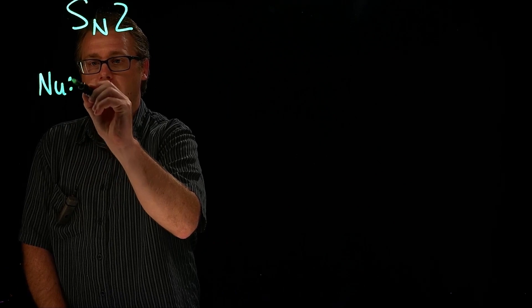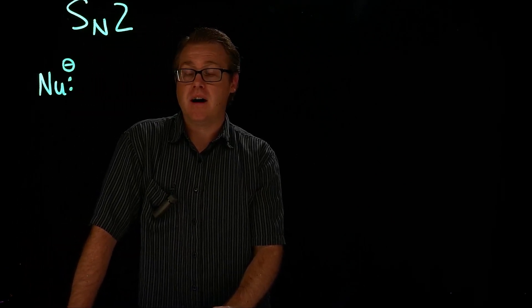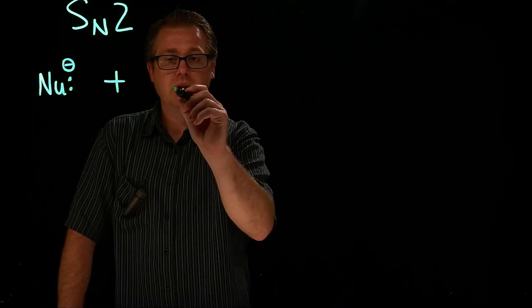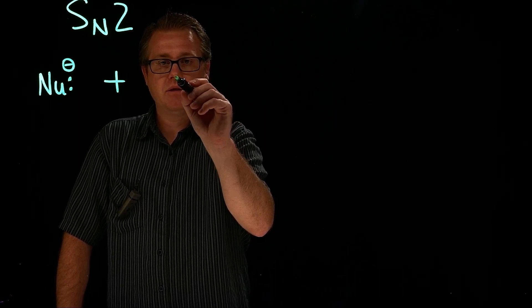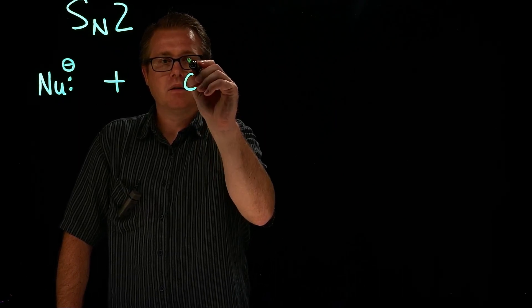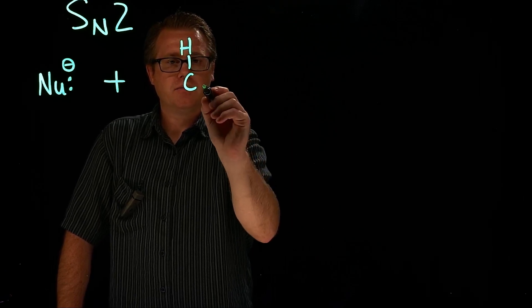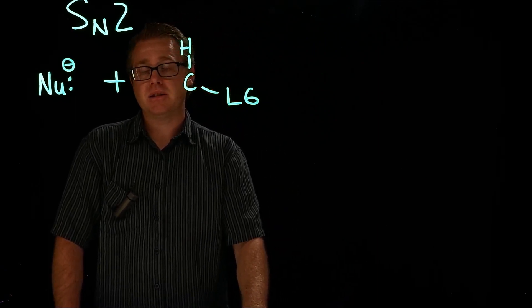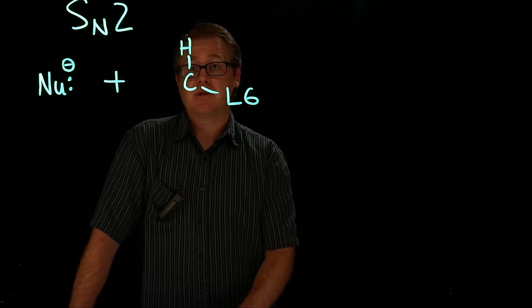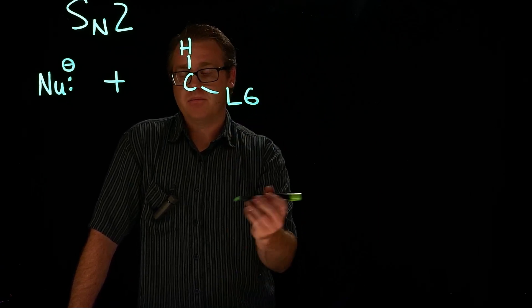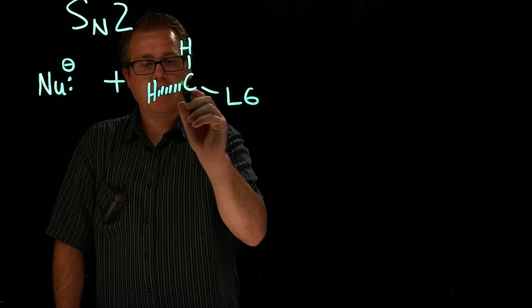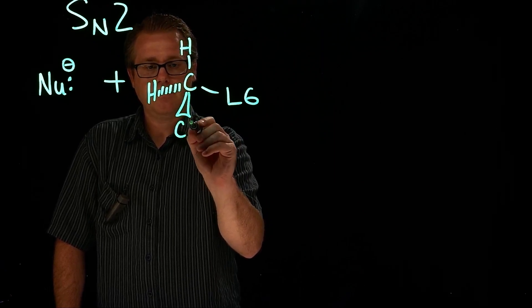A generic SN2 mechanism is when you take a nucleophile — in particular a strong nucleophile. Strong nucleophiles typically have a negative charge. We treat that nucleophile with a substrate. I'm going to represent LG as a leaving group. Leaving groups can be halogens and tosylates and other species that you'll see as you progress in the course. And then we have our dashed hydrogen right there and a methyl group.